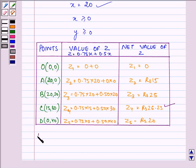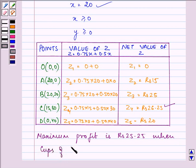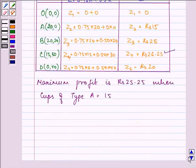When maximum profit is rupees 26.25, cups of type A are 15 and cups of type B is equal to 30.